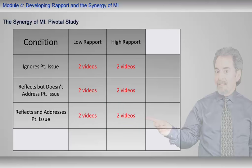Two videos, from 90 to 120 seconds in length, were produced to represent each of the six cells of the design. The dialogue between the healthcare professional and the patient in each video was scripted to represent the conditions of the six cells. Participants in the experiment viewed each of these 12 videos in randomized order, and then rated the likelihood that the patient in the video would engage in the health behavior change discussed.